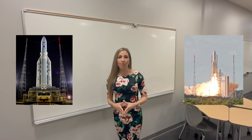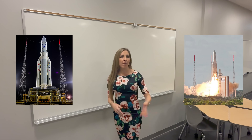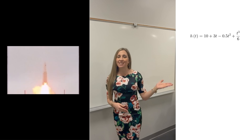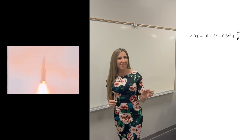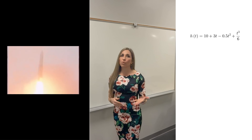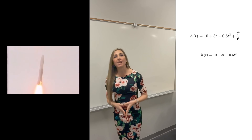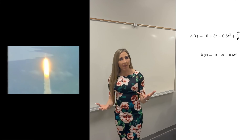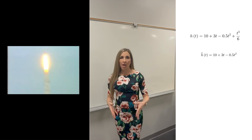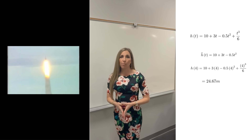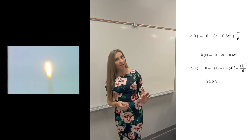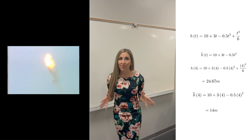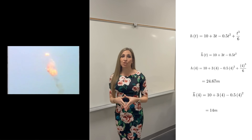Say we're modeling the height of a rocket using a Taylor polynomial of order 3: h of t equals 10 plus 3t minus 0.5t squared plus t cubed over 6. If we truncate this at t squared, we get a polynomial of order 2: h-hat of t equals 10 plus 3t minus 0.5t squared. Comparing both functions at t equals 4, the original polynomial gives a height of 24.67 meters while the truncated function gives only 14 meters — that's over 10 meters of discrepancy. In space flight, this kind of miscalculation can be catastrophic.